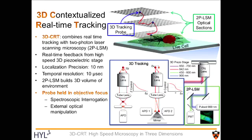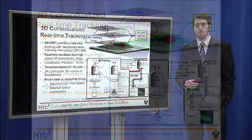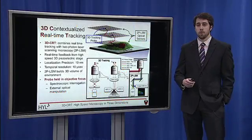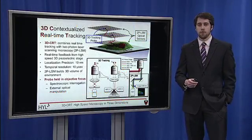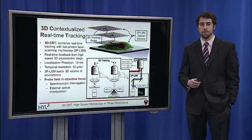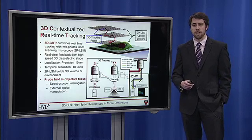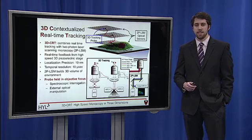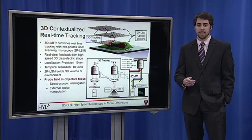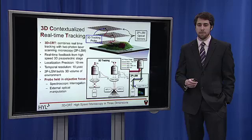Two-photon laser scanning microscopy provides 3D context by collecting optical sections traversed by the tracking probe. More importantly, the probe is held in the objective focus, allowing further spectroscopic interrogation and even external optical manipulation.